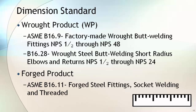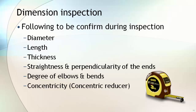Dimensions of the fitting must meet the standard requirement. For wrought product, dimensions are covered in ASME B16.9 and B16.28. B16.9 covers the factory-made wrought butt-welded fittings for sizes ½ inch to 48 inch, and B16.28 covers the short radius elbow and returns for sizes ½ inch to 24 inch. For forged fittings, dimensions are covered in ASME B16.11. During dimension inspection, diameter, length, thickness or schedule number, straightness and perpendicularity of the fittings, degree of the elbow and bends, and the concentricity of the reducer are confirmed against the standard requirement.